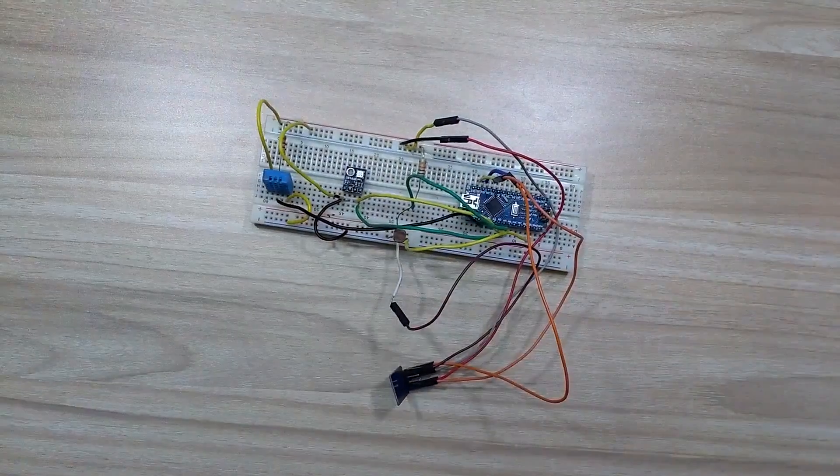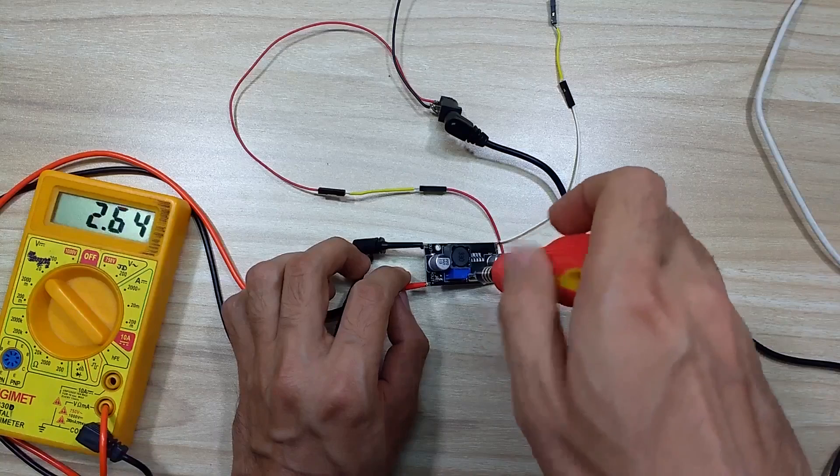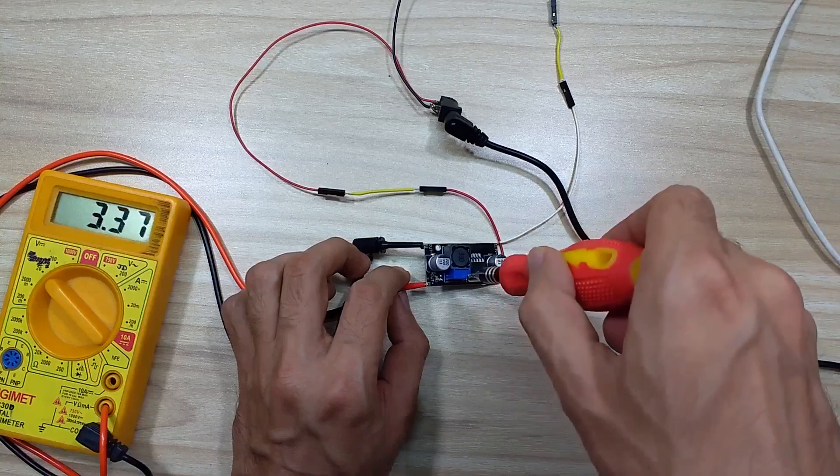Then I set our LM2596 based voltage regulator's output to 3.3 volt and then I uploaded the code to Arduino Nano.